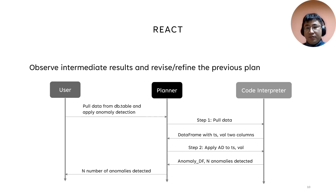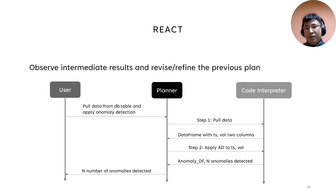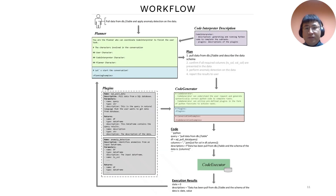In the previous demo, the user wants to pull data from a table in the database. The planner splits the task into two steps. The interesting part is that the planner needs to observe the data schema before applying the anomaly detection algorithm, because the two column names are necessary arguments. Without the help of the communications between the two roles, we cannot achieve this. This diagram shows the internal workflow that happens inside Taskweaver for the first step about pulling data from the database.